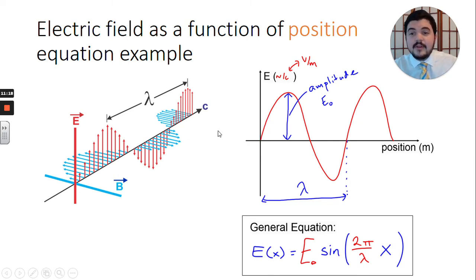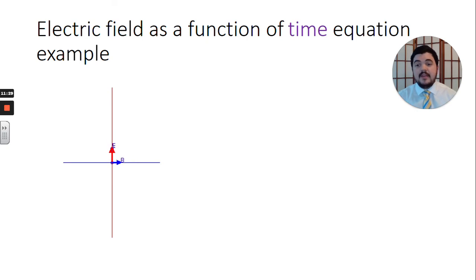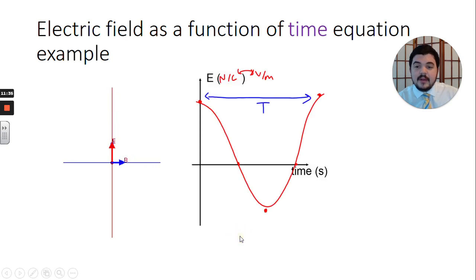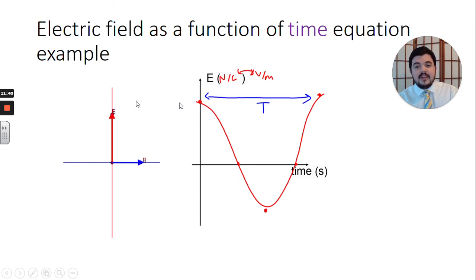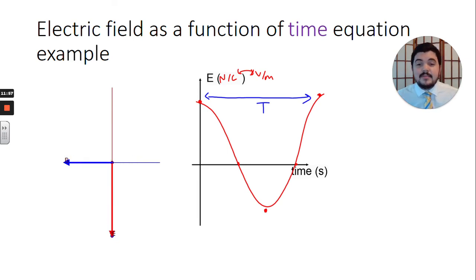Now let's do another example — this time for electric field as a function of time. We're not looking at the whole wave; we're looking at just one individual vector, one slice of the wave, watching it as time goes on. Starting when the E field is at the top, the graph goes down then comes back up. The crest-to-crest distance here is not wavelength — it's now the time period, because we're looking at how much time passes between oscillations, not physical distances.